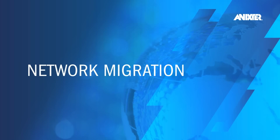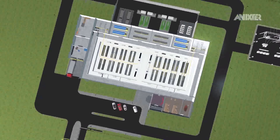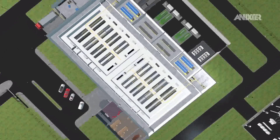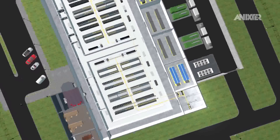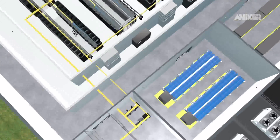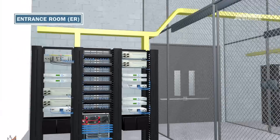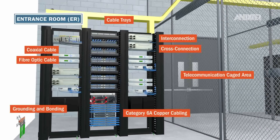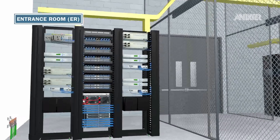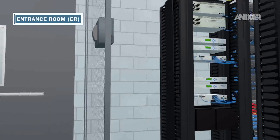Interoperability doesn't stop with security. It is the foundation of a converged infrastructure platform for versatile network and IT investments. Carrier service feeds enter and exit the data centre via the entrance room, a physical space that allows interconnection and cross-connection to single or multiple carriers.